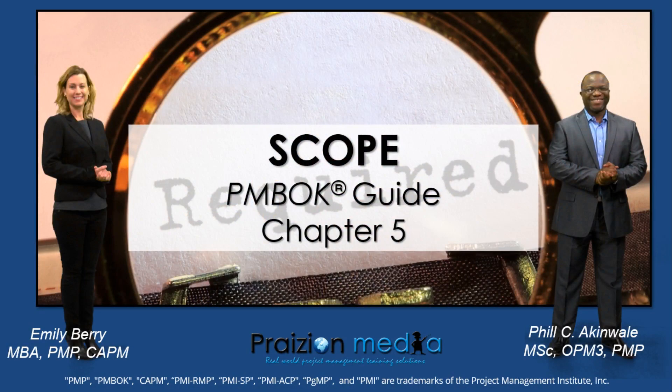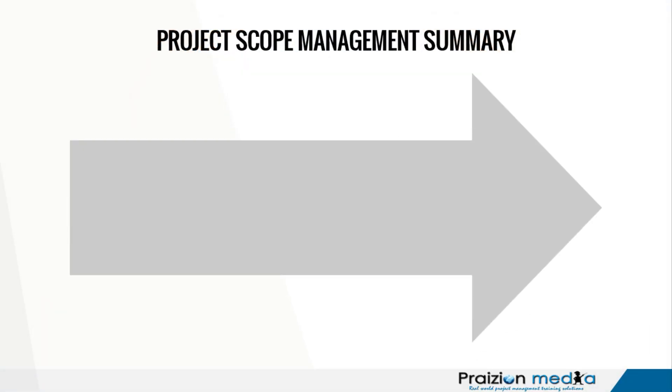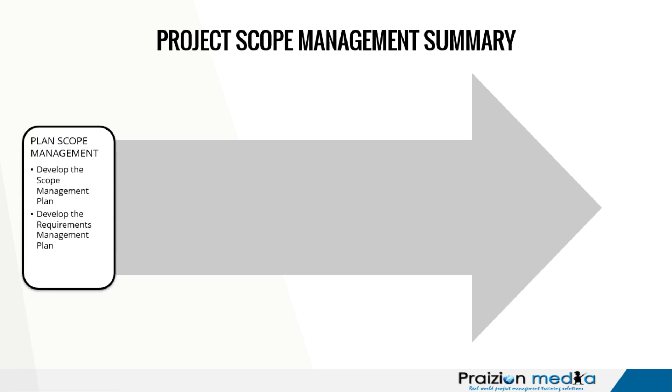If this is something you're struggling with, there is help — we have a whole lot more instruction from where this is coming. So let's talk about the scope management processes very rapidly here. Project Scope Management has six processes and the first one is Plan Scope Management. What is Plan Scope Management? It is developing the Scope Management Plan and the Requirements Management Plan.